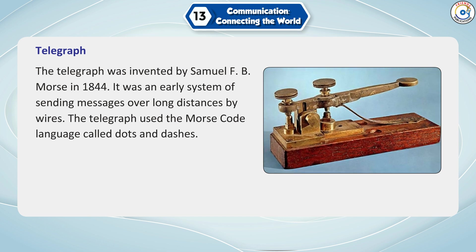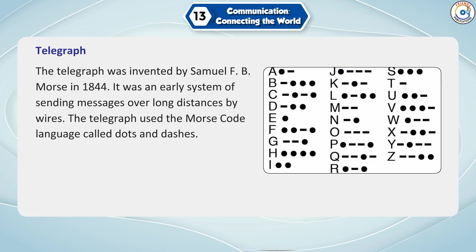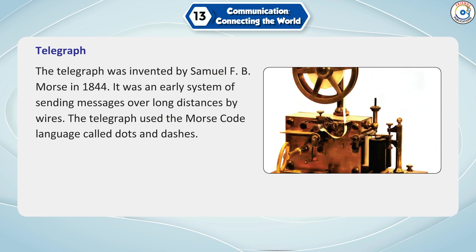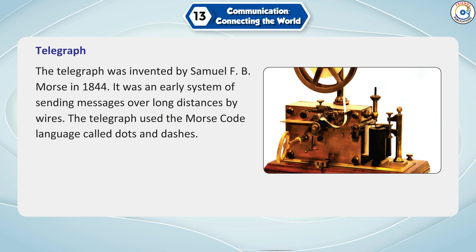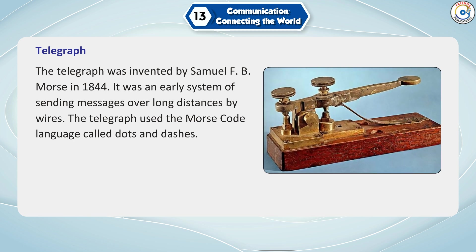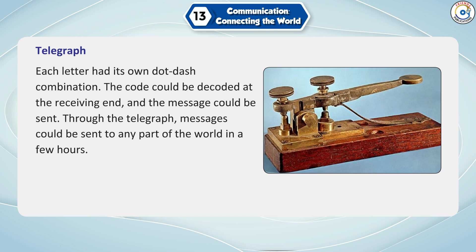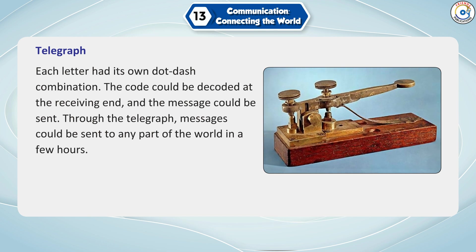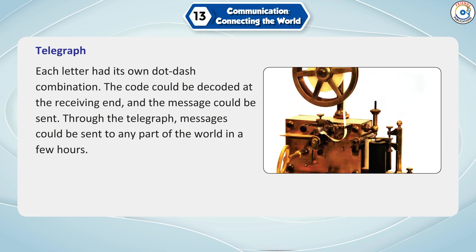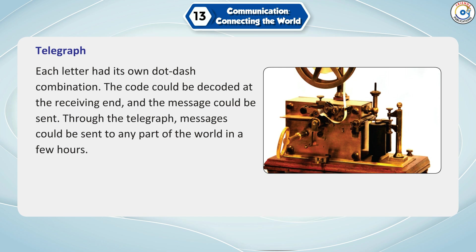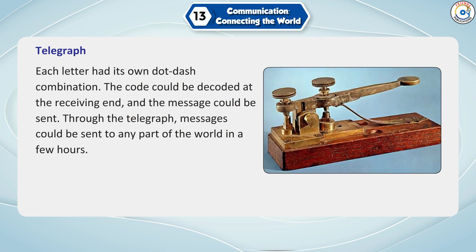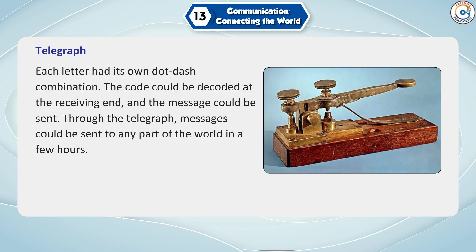The telegraph was invented by Samuel F. B. Morse in 1844. It was an early system of sending messages over long distances by wires. The telegraph used the Morse code language called dots and dashes. Each letter had its own dot-dash combination. The code could be decoded at the receiving end. Through the telegraph, messages could be sent to any part of the world in a few hours.